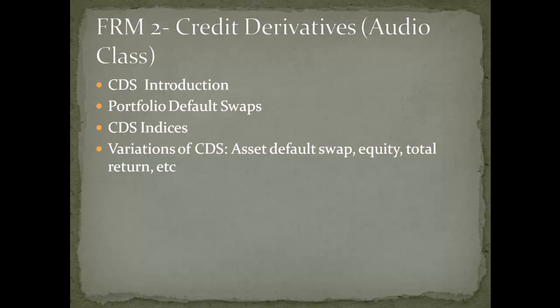It is the responsibility of the protection seller to compensate the protection buyer for a credit event. There are two standard settlement methods: cash settlement and physical settlement. Under cash settlement, the protection seller makes a one-time cash payment equal to par minus the current market price after the credit event. Under physical settlement, the protection buyer delivers the underlying reference to the protection seller and receives a cash payment equal to par value. Both methods of settlement are economically equivalent because the protection buyer is made whole.